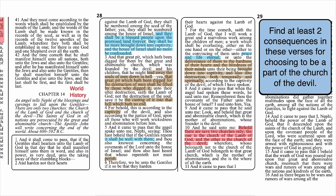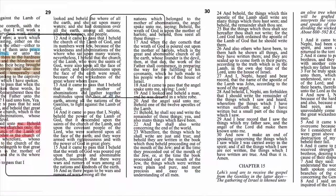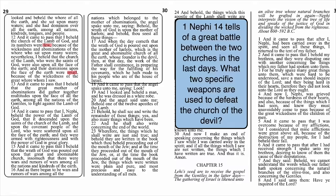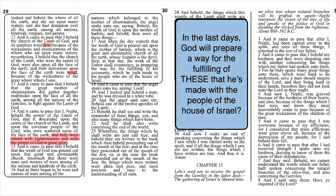The answers to these next questions come from verses 11 through 17. What two words describe the size of the church of the Lamb of God? Few and small — it shouldn't surprise us that the church is small compared with the rest of the world; it's been prophesied that way. Question 5: 1 Nephi 14 tells of a great battle between the two churches in the last days. What two specific weapons are used to defeat the church of the devil? Verse 14 tells us the saints are armed with righteousness and the power of God — another name for the power of God is priesthood. The church of the devil will be defeated by righteousness and priesthood power. Question 6: In the last days, God will prepare a way for the fulfilling of his covenants with the house of Israel. God always keeps his covenants.